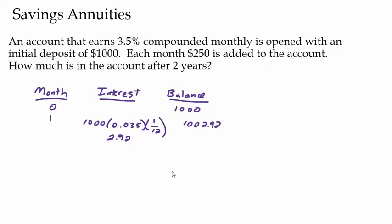So when I go to month two, now I'm going to add $250 into my account. So when I start month two, I've really got $1,252.92. So now when I go to month two, my interest is now going to be calculated on my new principal. I'm earning interest on the $1,000 that I put in initially. I'm earning interest on the $250 that I just put in. And I'm earning interest on the interest from last month, the $2.92. That's where the compound interest comes in.